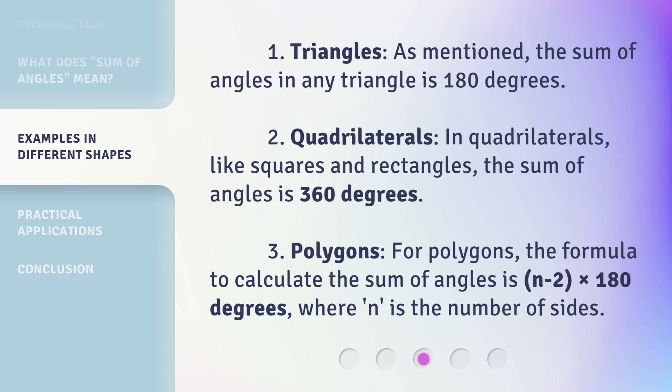3. Polygons: For polygons, the formula to calculate the sum of angles is (n-2) times 180 degrees, where n is the number of sides.